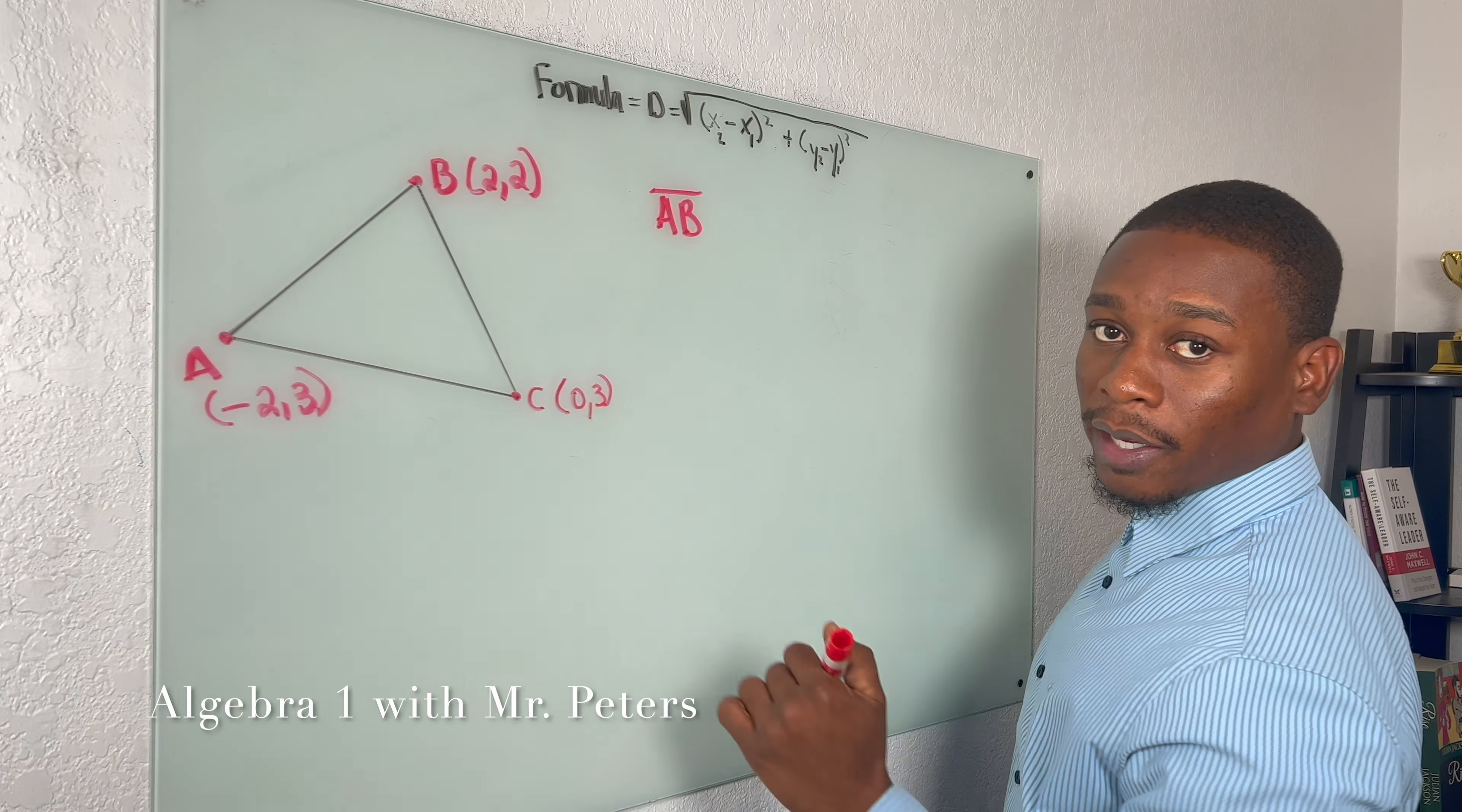So when I set up my first side length, we're going to have (-2 - 2)² + (3 - 2)². And when we simplify, we're going to get (-4)² + (1)². And our final answer is going to be radical 16 plus 1, which will be √17. So this would be our side length for AB.